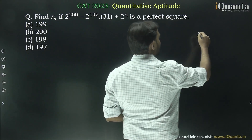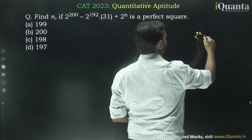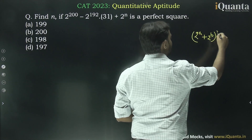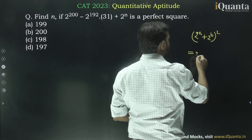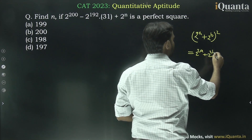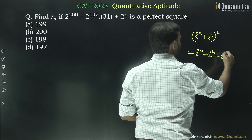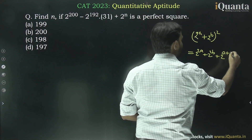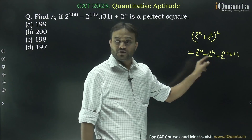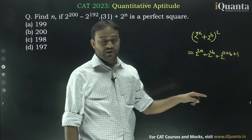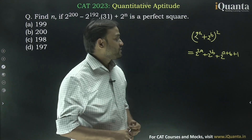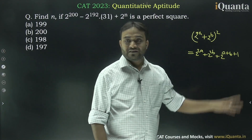If I take the perfect square of (2^a + 2^b) whole square, this will give us 2 to the power 2a plus 2 to the power 2b plus 2 into 2 to the power a into 2 to the power b, which will become 2 to the power a+b+1. So all the terms are in the form of 2 to the power x.